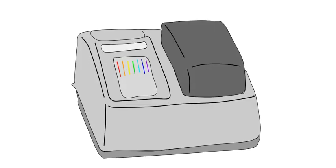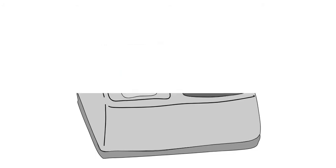Spectrophotometry is a method by which we can measure the change in concentration over time by putting a solution into the spectrophotometer and measuring the absorbance. You can use the formula A equals ABC to find the concentration using the absorbance, and we have used this method in class.